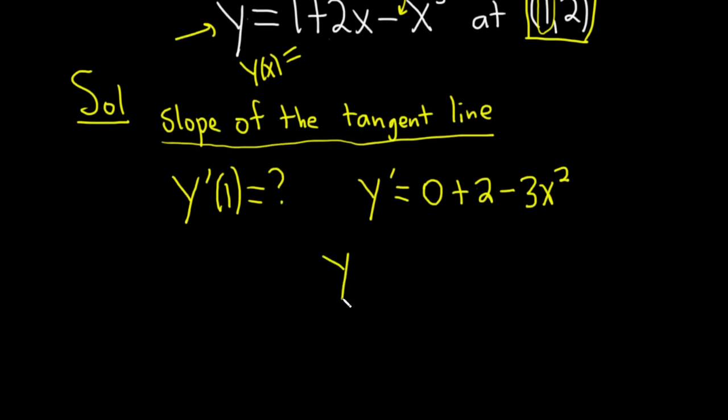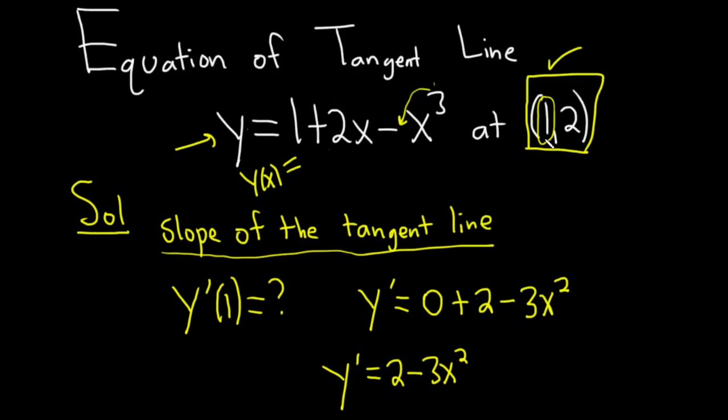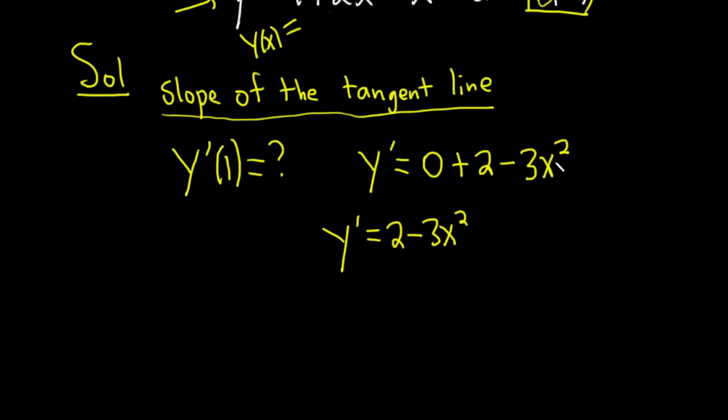So y prime is equal to 2 minus 3x squared. So this derivative is the derivative of the function and basically now this tells us the slope at any x value. Since we're looking for the slope of the tangent line at x equals 1, all we do is plug in 1.